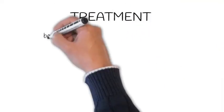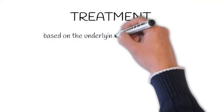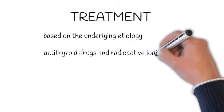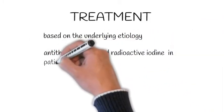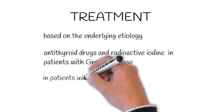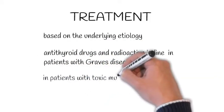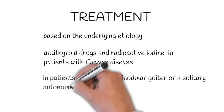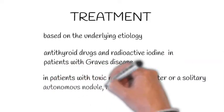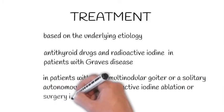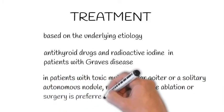Treatment should be based on the underlying etiology of subclinical hypothyroidism. Antithyroid drugs and radioactive iodine are appropriate treatment options in patients with Graves' disease. In patients with toxic multinodular goiter or a solitary autonomous nodule, radioactive iodine ablation or surgery is preferred because spontaneous remission is unlikely to occur.